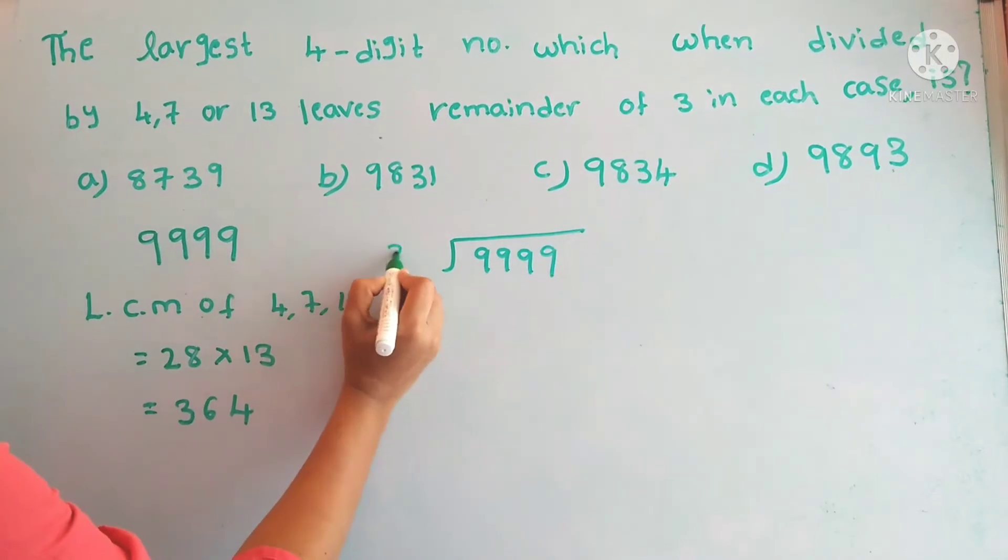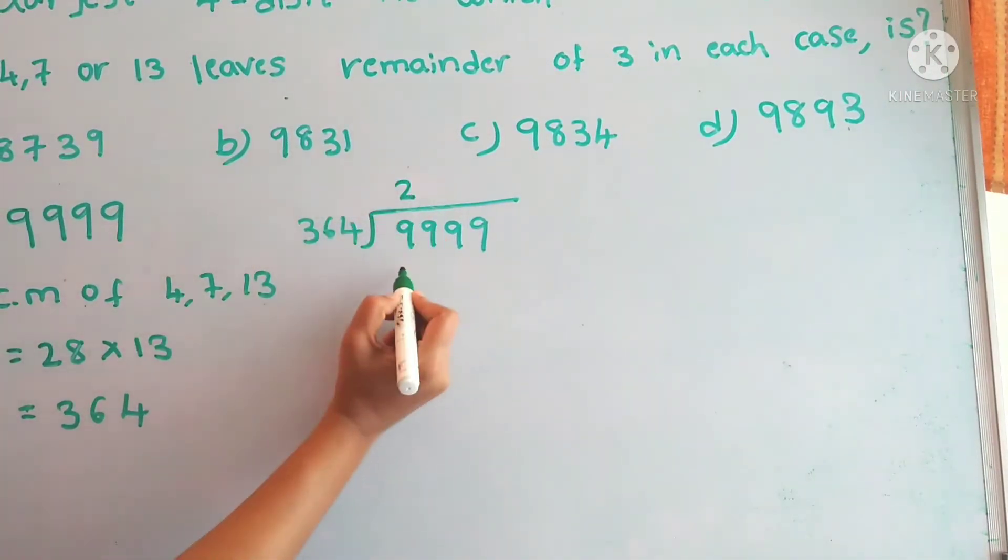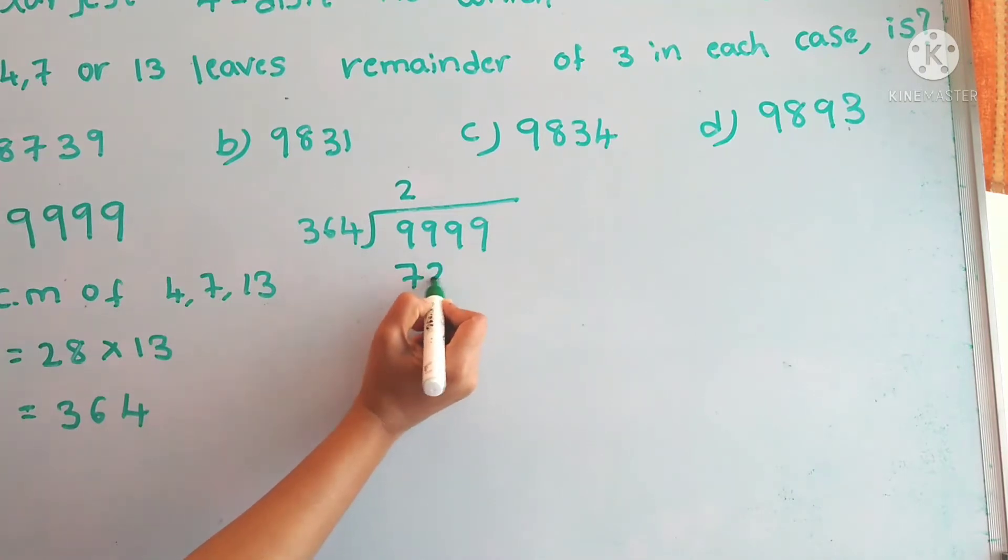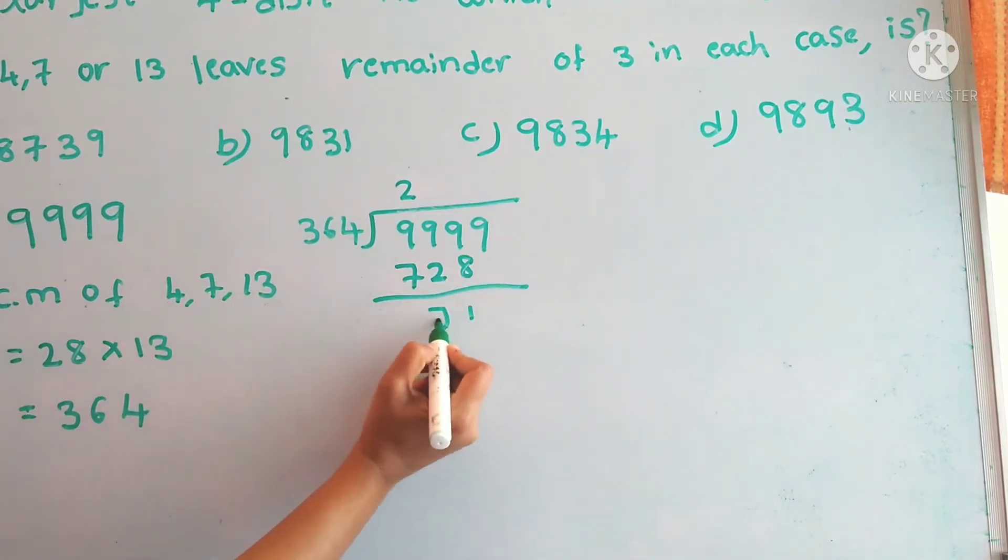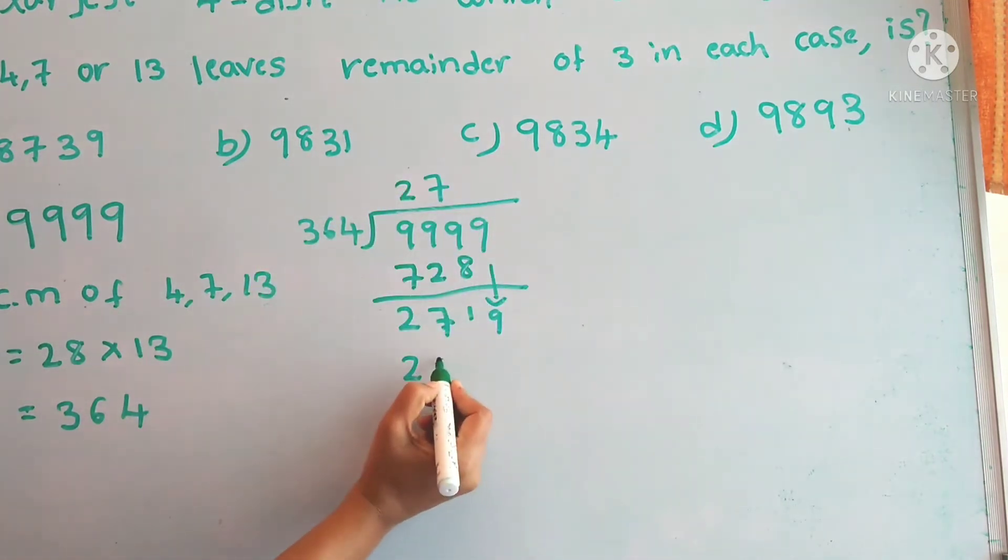So 364 times 2 is 728. Here we will get the remainder 1, 7 and 2. Again 9 will come down. So 364 times 7 is 2548.